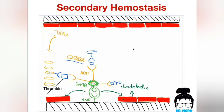In the previous video, we discussed primary hemostasis and the different steps involved in it, ending up in aggregation, where the platelets aggregate together through fibrinogen. Is that enough? No, it's not enough, because though the clot is formed, it's not stabilized yet.